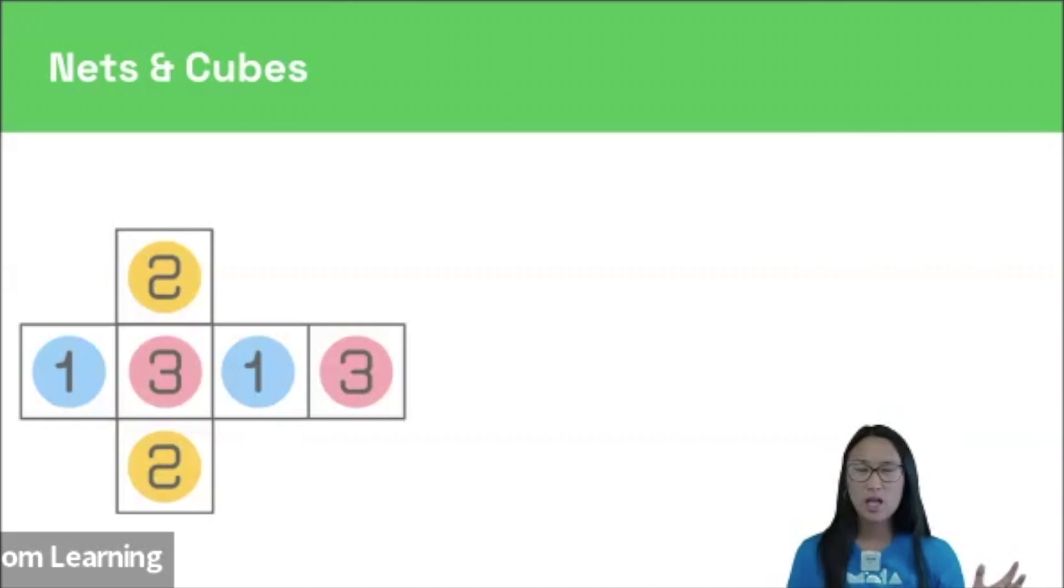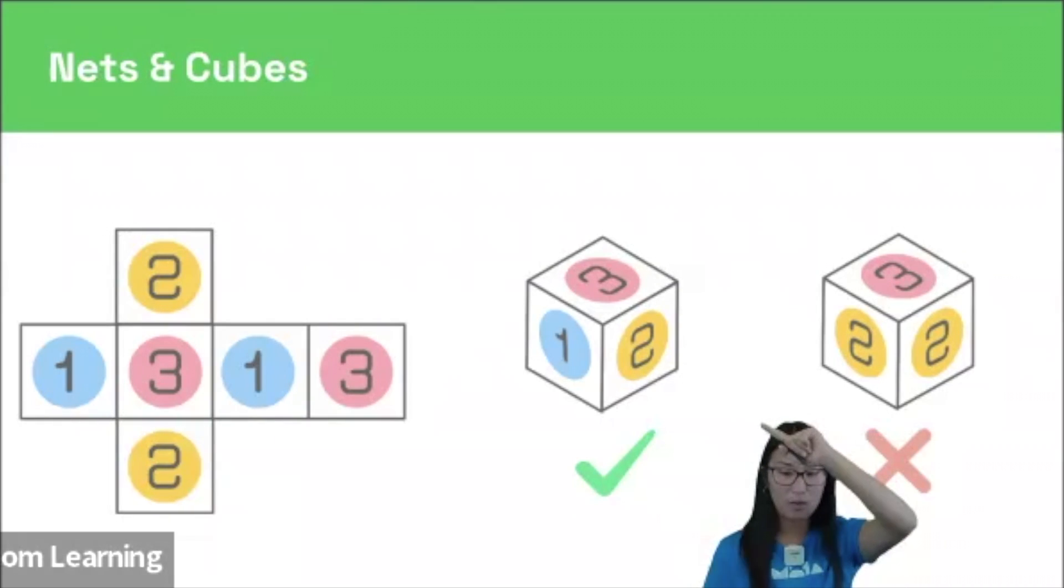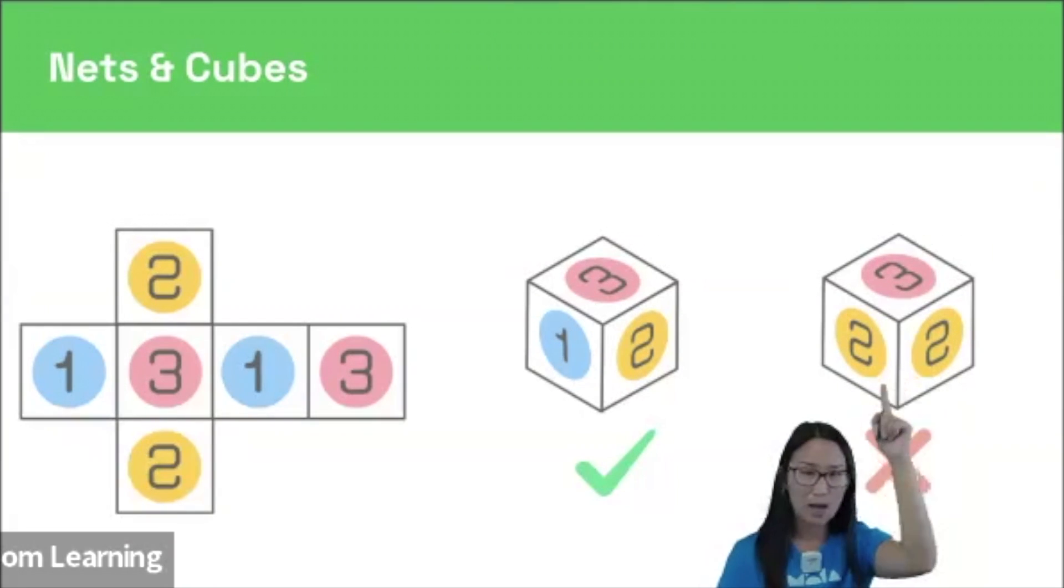This means that when the net is folded up, we would never see those faces in an opposite pair at the same time. We would see one, two and three, but we would never see two twos at the same time.